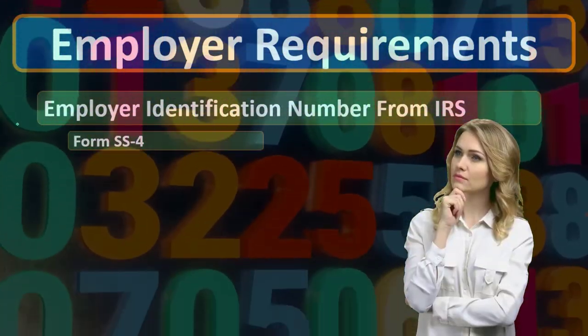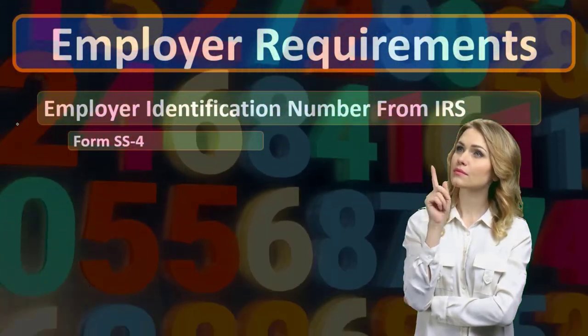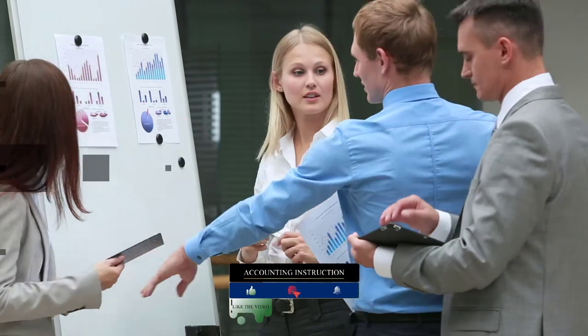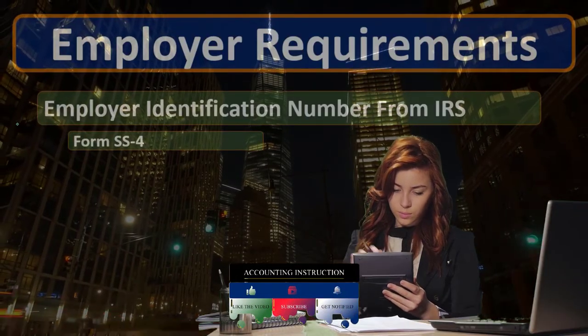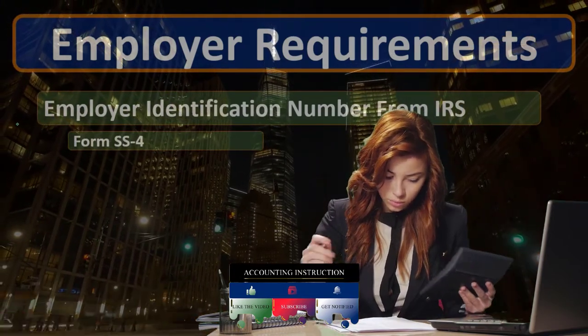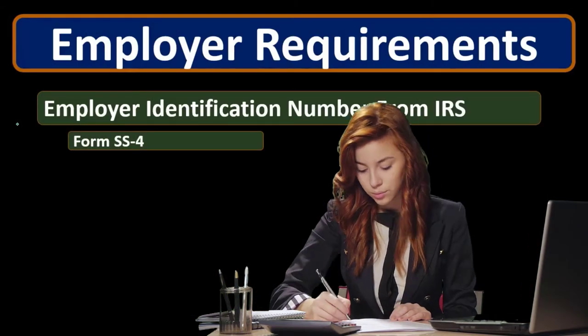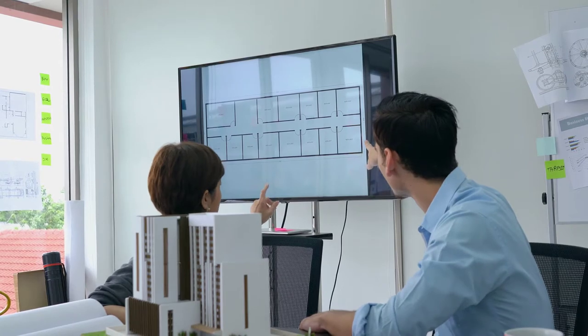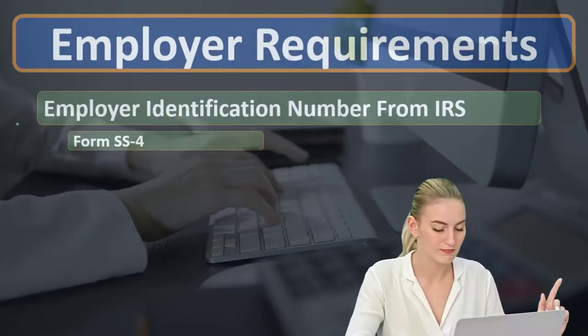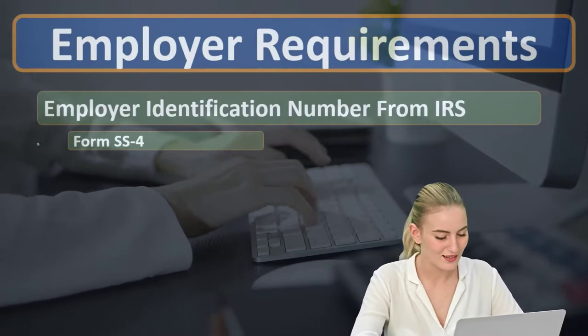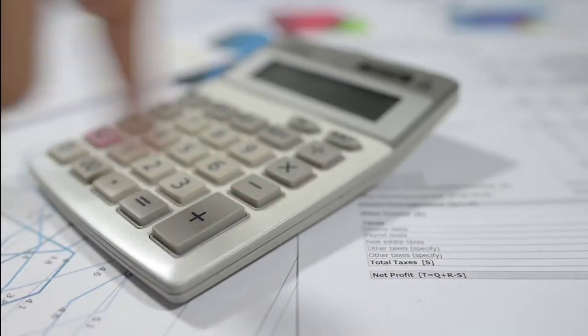This number is important because it is more standardized in terms of employment — any type of organization can get an EIN, even a sole proprietor, a partnership, or a corporation. A corporation is a separate legal entity and has its own corporate number for reporting income taxes, but partnerships and sole proprietors have different reporting requirements. A sole proprietor may use a social security number. The employer identification number gives the IRS a more standardized process for payroll regardless of entity type.